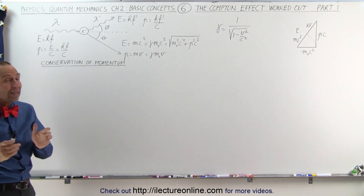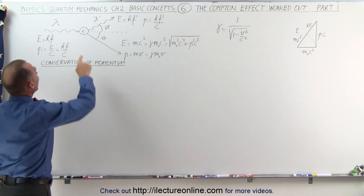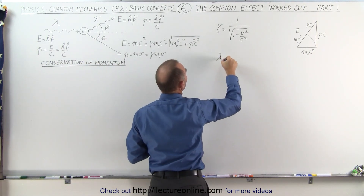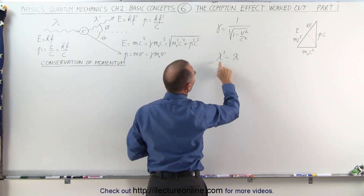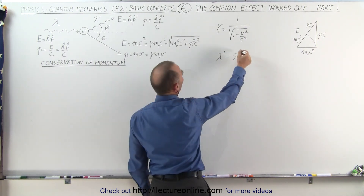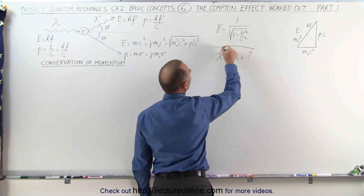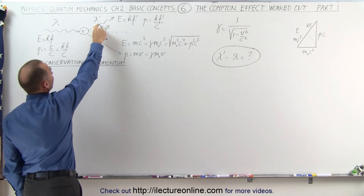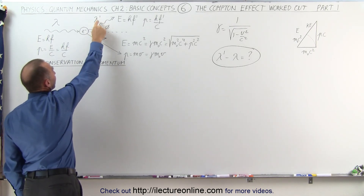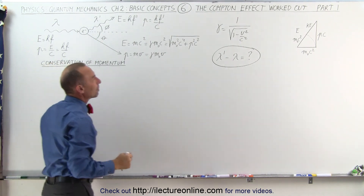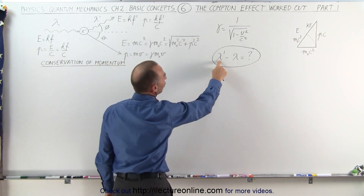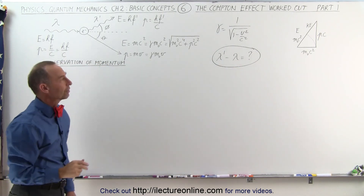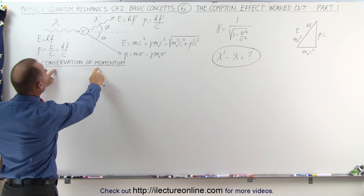What we're trying to find now is how much the wavelength will change — basically lambda prime minus lambda, the difference. We're looking for the change in the wavelength of the photon before and after the collision: the longer wavelength after minus the shorter wavelength before. That's what we're trying to figure out using conservation of momentum.